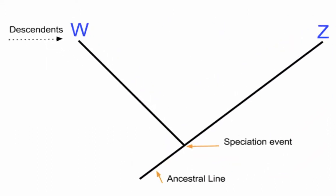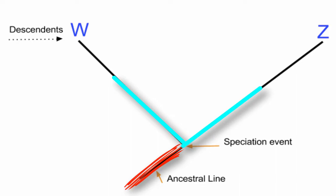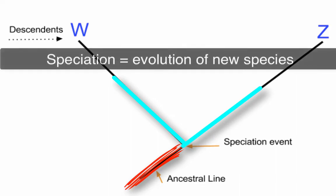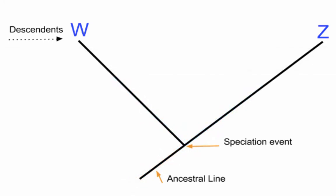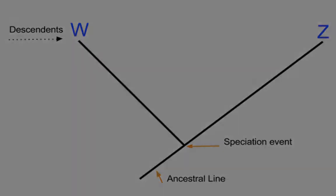We can focus on just part of the tree. We have descendants W and Z — you see that ancestral line, that's where the common ancestor existed, which eventually gave rise to W and Z. And where the tree starts to branch apart, that is a speciation event. We call speciation the evolution of new species. Within that ancestral group, there was some set of mutations that rendered members of each group a different species from each other.